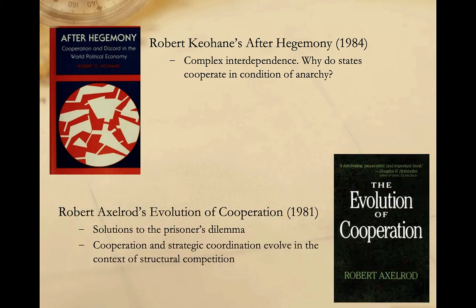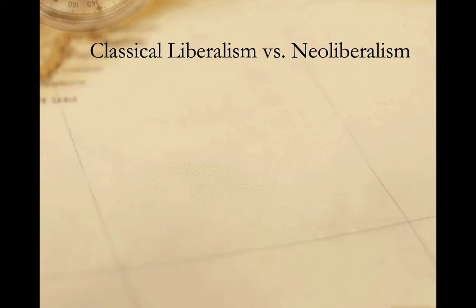The other was Robert Axelrod's book The Evolution of Cooperation, published in 1981. Axelrod's book shows how cooperation and coordination of strategy can evolve in the context of structural competition between actors. For more on this, see our video on the prisoner's dilemma and its solutions. What emerged from the work of Axelrod, Keohane, and others was the school of thought we now know as neoliberal international relations.